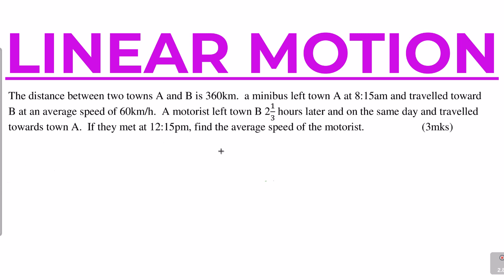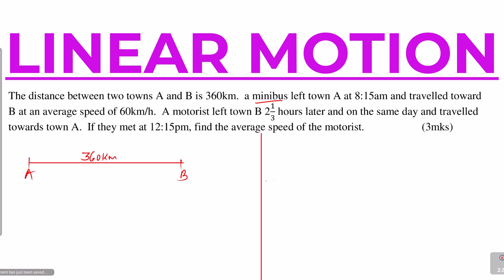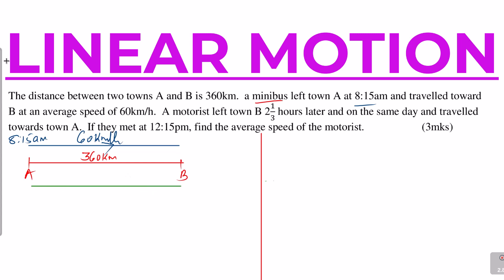Let's start from the distance between A and B. So that is A and B — that distance is 360 kilometers. The minibus left A towards B, moving in that direction at 60 kilometers per hour, and left at 8:15. Then the motorist left B towards A, so it was moving in the opposite direction, two and a third hours later.